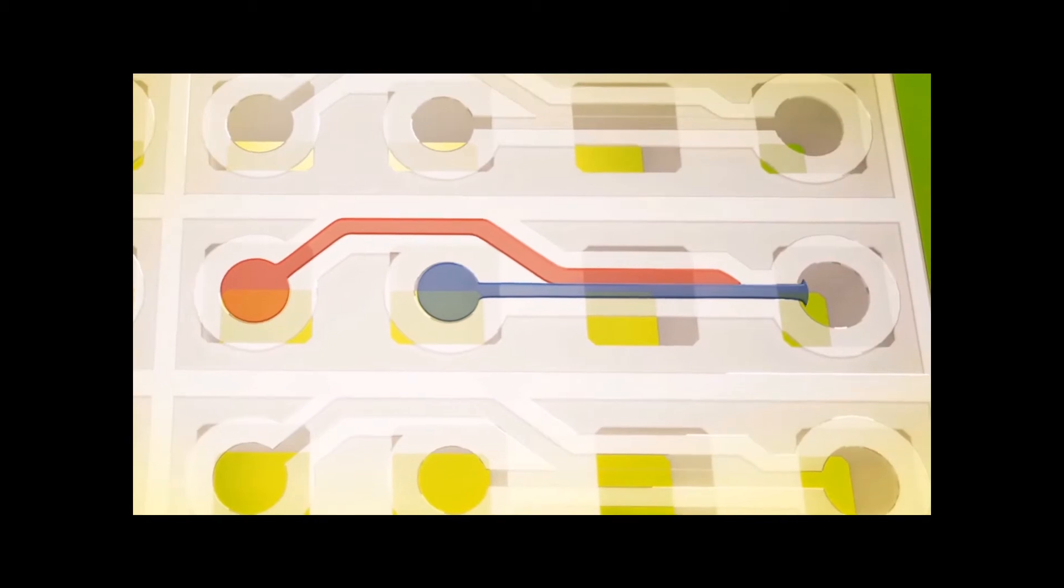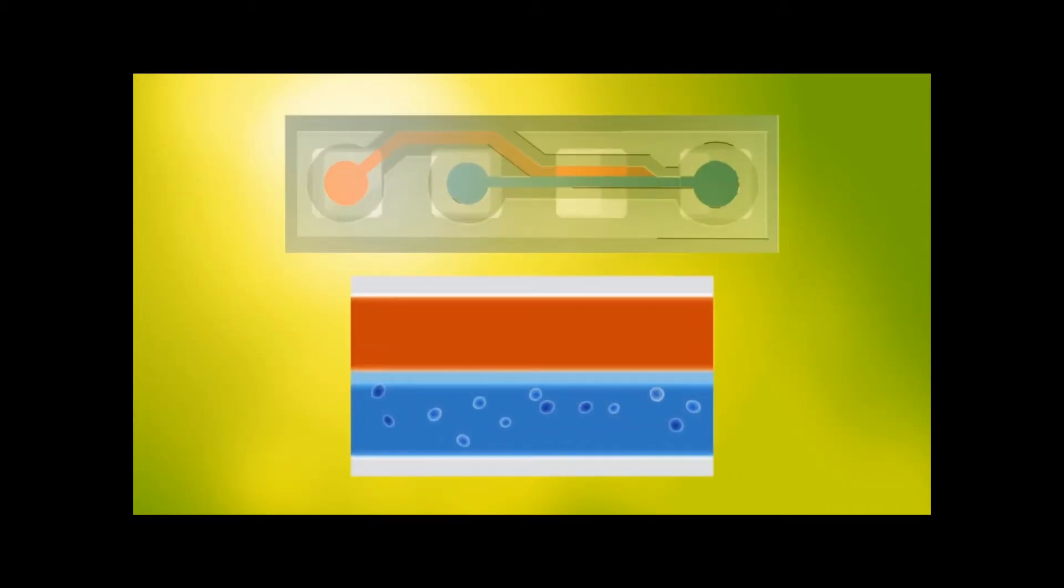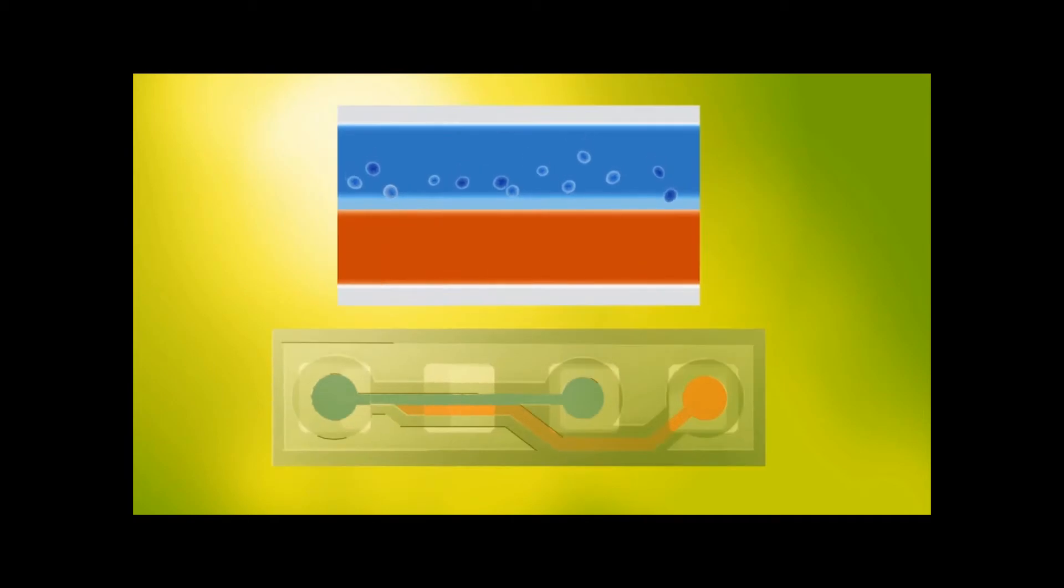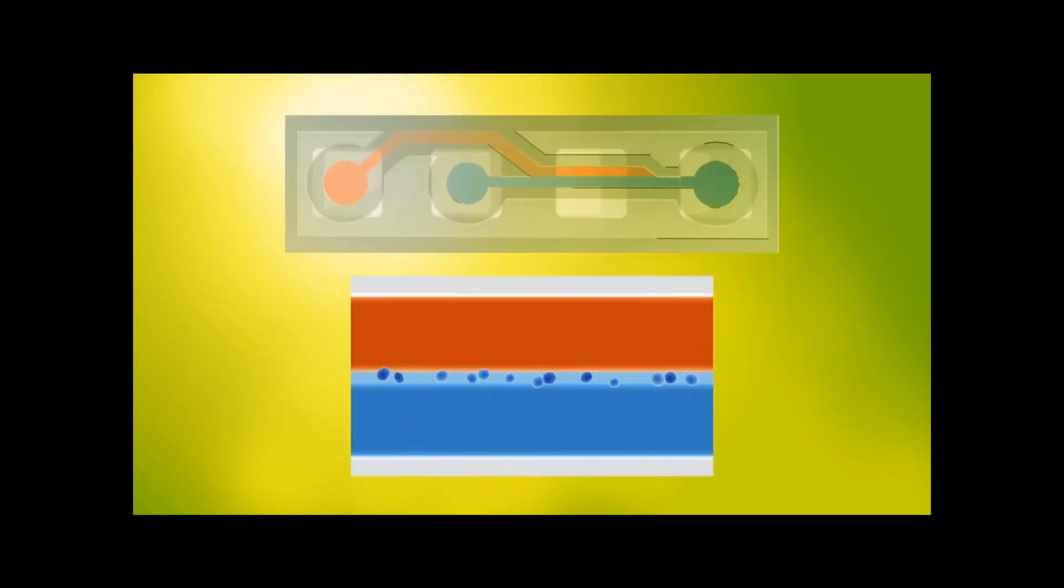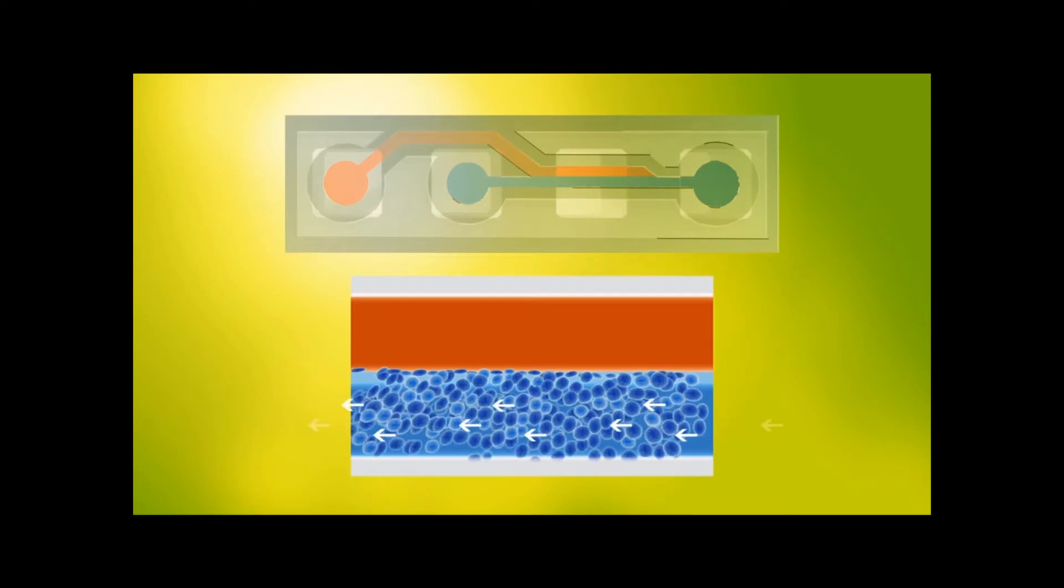The cells are allowed to settle against the gel by gravity. Following attachment of the cells, perfusion is started to allow formation of perfusable tubules alongside the gel.